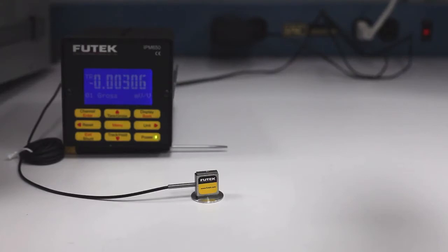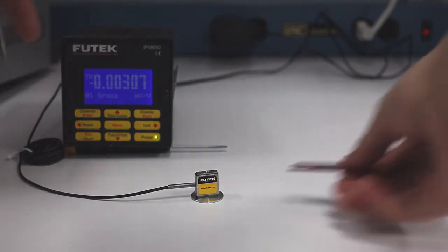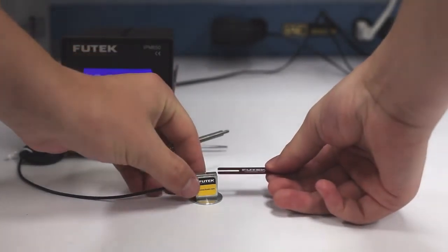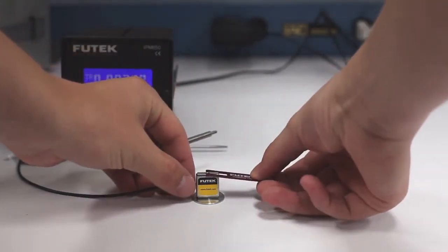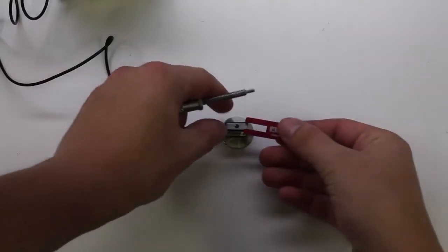Now we will attach a hook to the loading surface of our LSB200. I have already attached a flat loading disc to the bottom surface for added stability. Slide the tool into the sensor so that the loading surface perfectly fills the gap in the tool. There should be no room for the sensor to move.